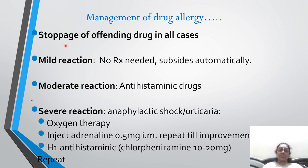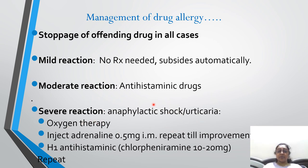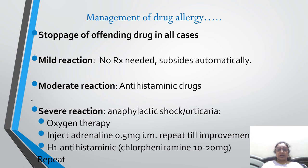Management of all kinds of allergic reactions: First, stop the offending drug in all types of allergic reaction. For mild reactions, no treatment is required — it will subside automatically. For moderate reactions, antihistaminic drugs can be given. In severe types of allergic reaction like anaphylactic shock or urticaria, oxygen therapy should be given. Injection adrenaline 0.5 mg at 1:1000 concentration should be given intramuscularly or subcutaneously. H1 antihistaminic like chlorpheniramine 10 to 20 mg should be given at the time of reaction.